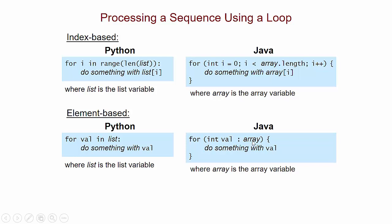and then we have our array variable. And that's going to do the same thing that for val in list does in Python. The loop variable val is going to get one value at a time, one element at a time, from the array. And then inside the loop, we'll do something with that element.